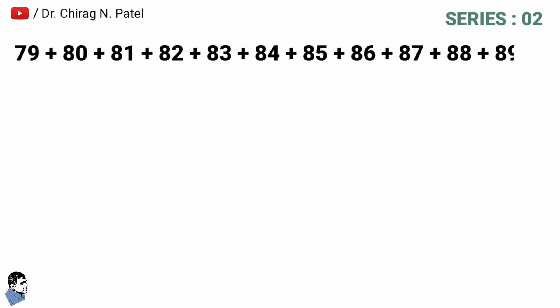Let's take another one. Series number two is 79 to 89. So it is required to do the addition of 79 + 80 + 81 + 82 + 83 + 84 + 85 + 86 + 87 + 88 + 89. In this series, addition of smallest and biggest: 79 + 89 is equal to 168.